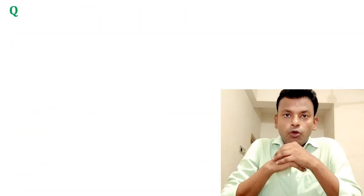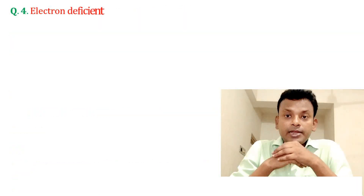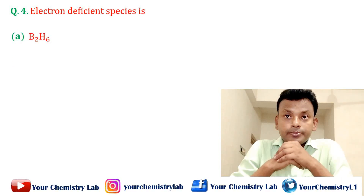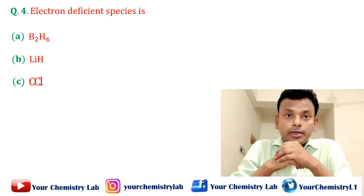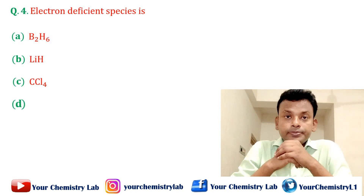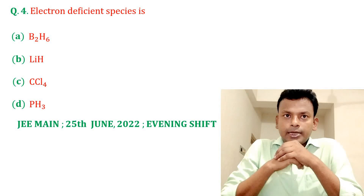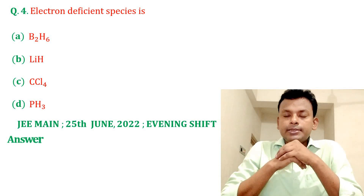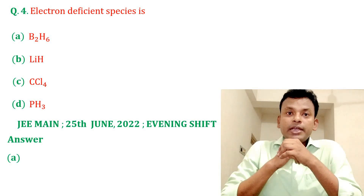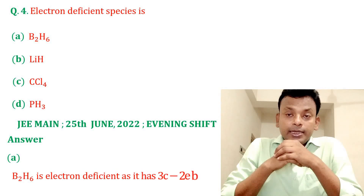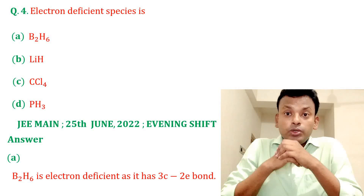Question number four: B2H6 is an electron-deficient species. Options A, B, C, and D are given. Answer: option A is correct. B2H6 is an electron-deficient compound as it has 3-centre 2-electron bonds.